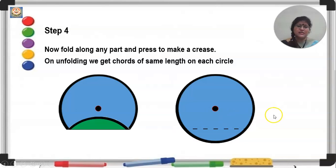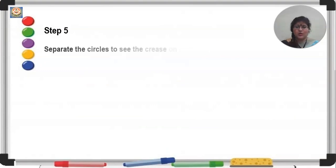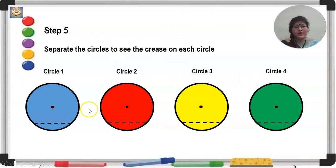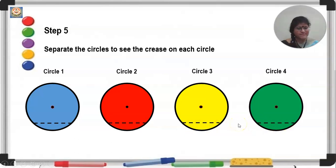When you separate the 4 circles, you will see a crease on all of them. The length of the crease will be equal on all circles because you stacked congruent circles and drew the crease on one — it appears on all the others too. In short, haven't you drawn congruent chords? Yes. This is the center of the circle, and you get congruent chords.